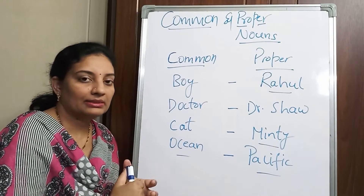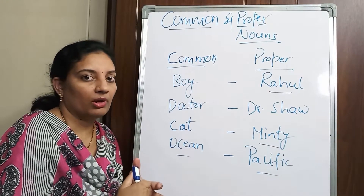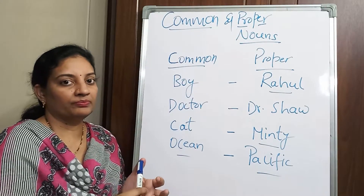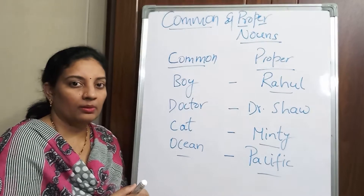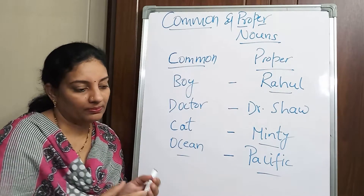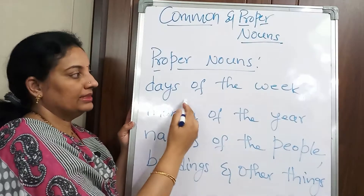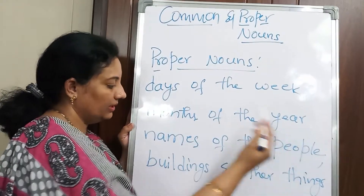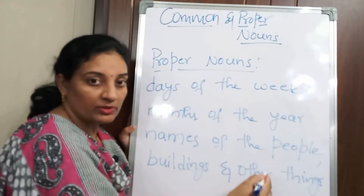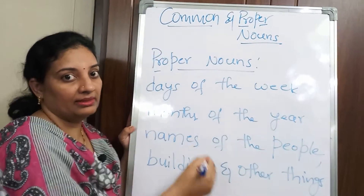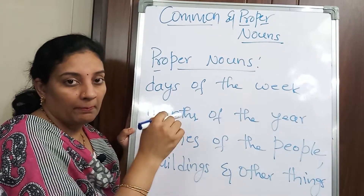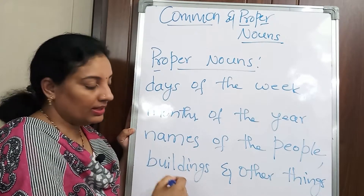Now I will write some sentences so that you get a clear-cut idea about common and proper nouns. Many of my students make the mistake of not capitalizing proper nouns. The proper noun categories where this mistake is common include: days of the week, months of the year, names of people, buildings, and even names of animals — as in the previous example where 'cat' is a common noun but 'Minty' is a proper noun.